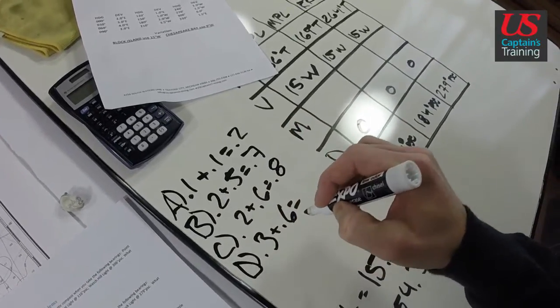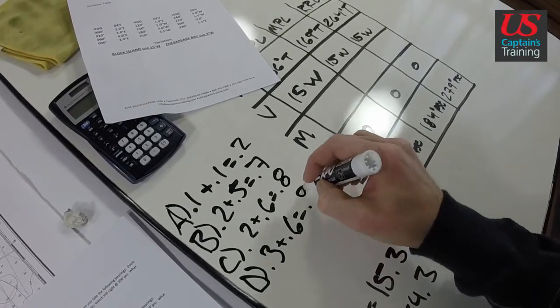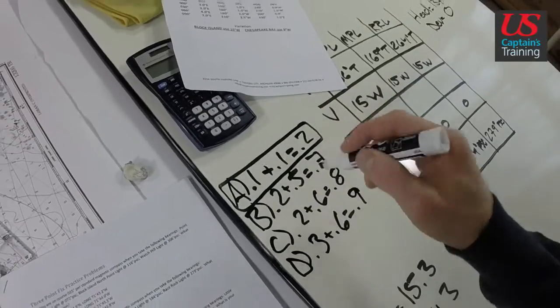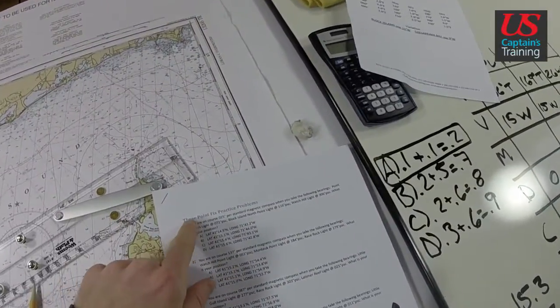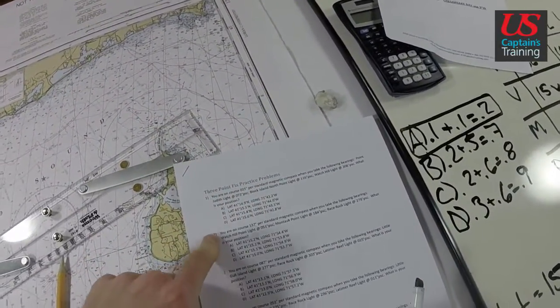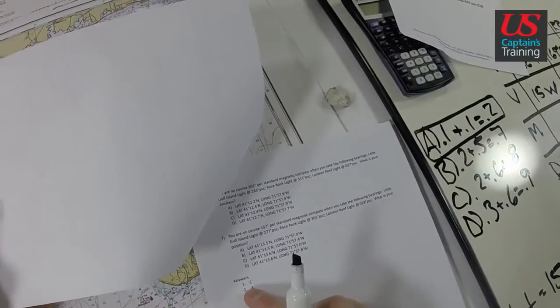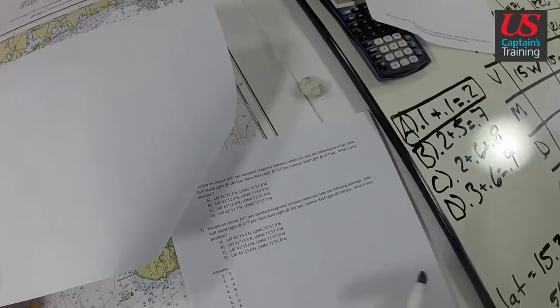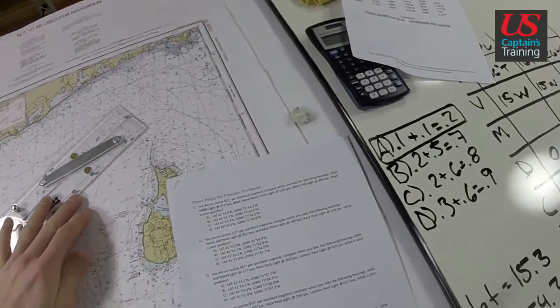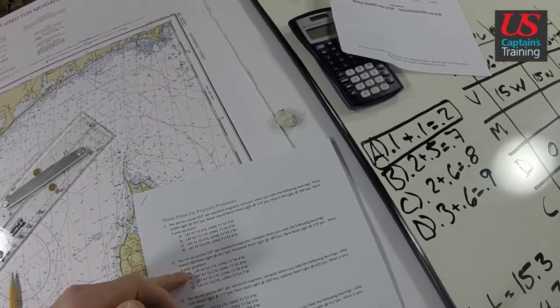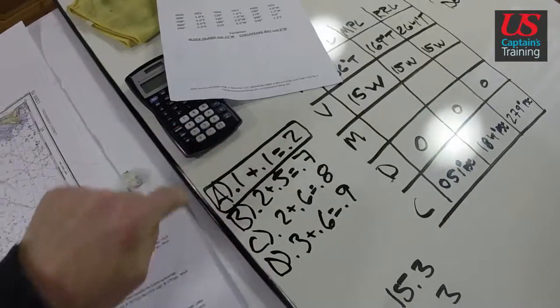Which one? A seems to be the closest from our calculations. Let's check it. Three-point-fix Practice Problem 2, we're saying it's A. The answer says it's A. So that is the answer to Three-point-fix Practice Problem 2, it's A, and we were 0.2 away.